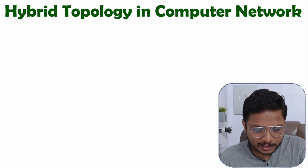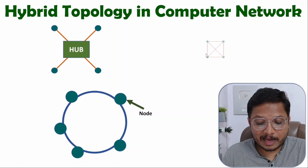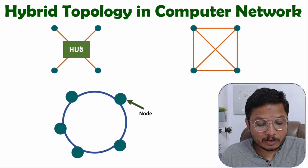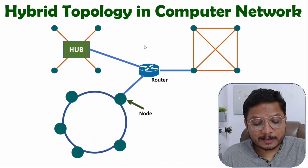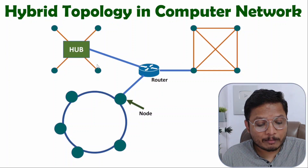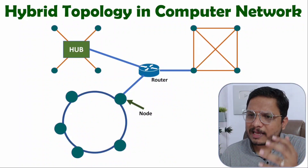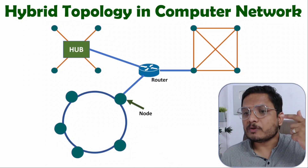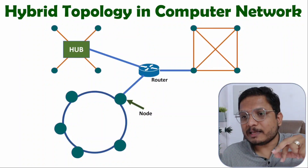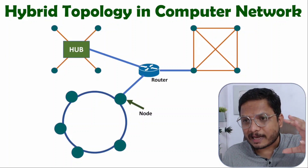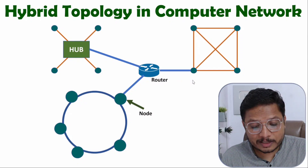For example, if we have star topology here, ring topology here, and mesh topology here, we can combine all these topologies with the usage of a router, and that makes hybrid topology. Students often ask whether we need to use a router only to club all those topologies together. The answer is no — to club all those topologies you can use various devices like hub, router, or switches. Based on the requirement we should select the appropriate device.